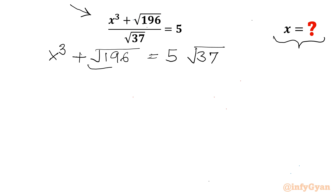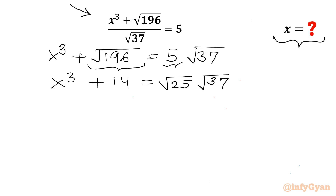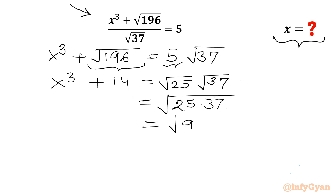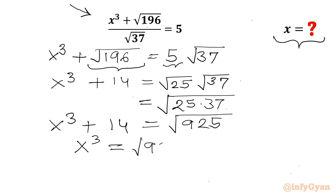Now we know that 196 is 14 squared, so √196 = 14. And 5 can be written as √25, so the right-hand side becomes √25 × √37, which is √925. So on the left-hand side we have x³ + 14. Taking 14 away from both sides, x³ = √925 − 14.